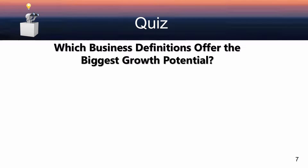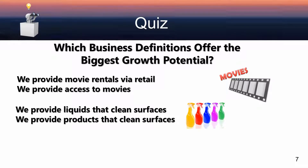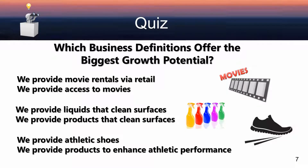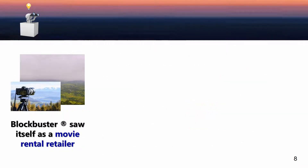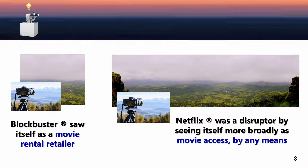So let's start with a quiz. Which business definitions do you think offer the biggest growth potential? We provide movie rentals via retail, or we provide access to movies? We provide liquids that clean surfaces, or we provide products that clean surfaces? We provide athletic shoes, or we provide products to enhance athletic performance? Blockbuster saw itself as a movie rental retailer. Netflix, on the other hand, was a disruptor by seeing itself more broadly as movie access by any means.